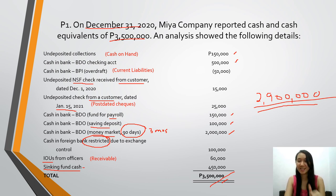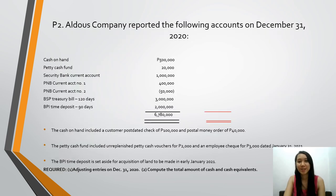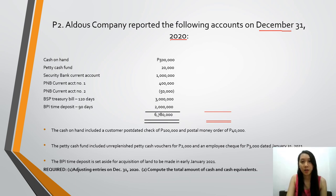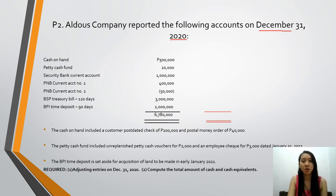Next, problem number 2. Aldo's Company reported the following accounts on December 31, 2020. Always highlight or note the reporting date — which here is December 31, 2020. The details are visible on screen. What's being asked are the adjusting entries on December 31, 2020 and the total amount of cash and cash equivalents. Let's go through the supporting notes one by one, starting with cash on hand.